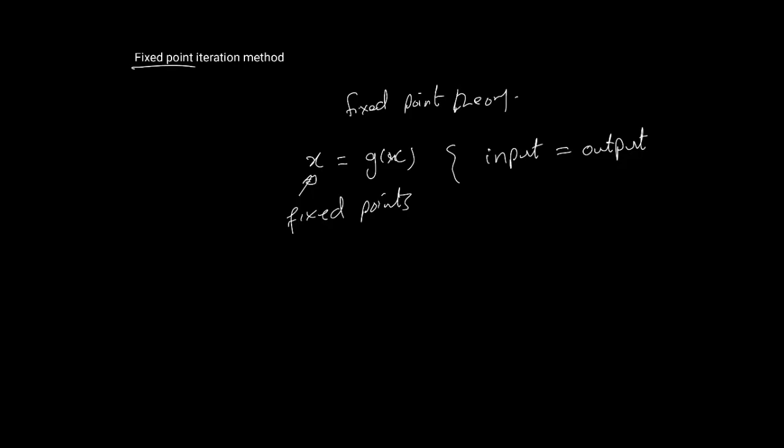How can we use this to set up an iteration method? Let's relate x equals g(x) to root finding. For our target problem which is f(x) equals zero, if p is a root, then f(p) is equal to zero by definition.